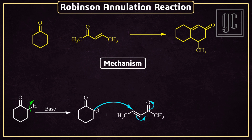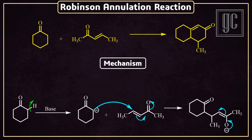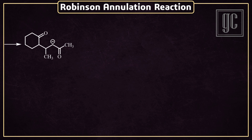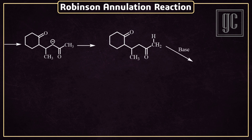Due to the Michael addition, one intermolecular carbon-carbon bond formation takes place. The pi electrons move to the carbonyl carbon and a new carbon-carbon bond is formed, and one negative charge on oxygen is generated. The negative charge on oxygen undergoes keto-enol tautomerism and a carbanion is formed; this charge is later neutralized by solvent.